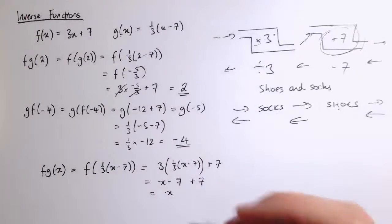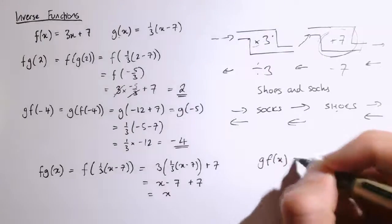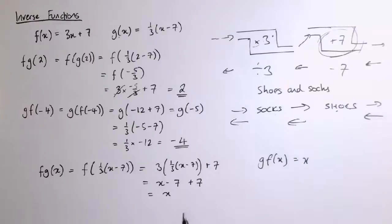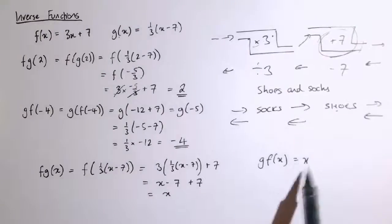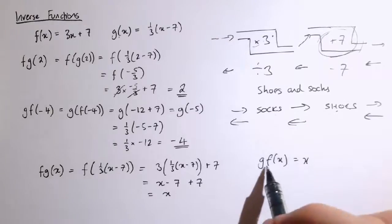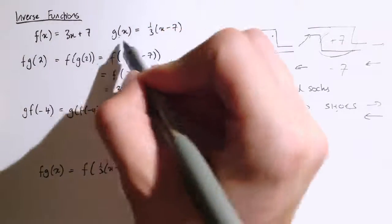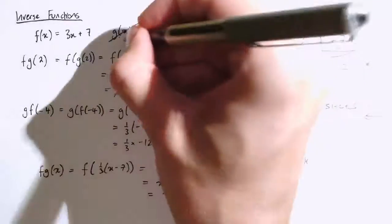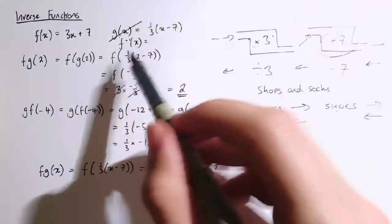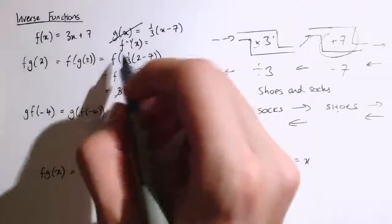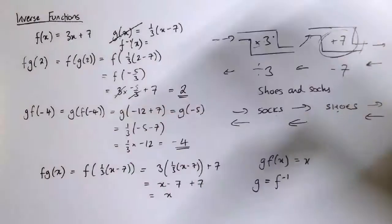And if you worked out g of f of x, you'd get x as well. And that's another way of thinking about the inverse, algebraically. It's the function that we can combine with the original function to get us back to the initial input. So here, g is the inverse of f and vice versa, so I could actually say that g is f inverse. So actually if this is f of x, this is another way of writing this instead of saying g of x is to say that this is f inverse of x, because it's exactly the function that undoes f of x, and that's how we write the inverse f with a minus 1 above it there.